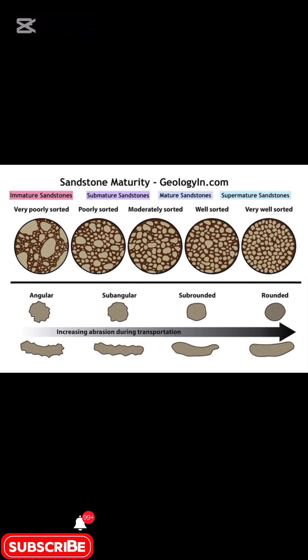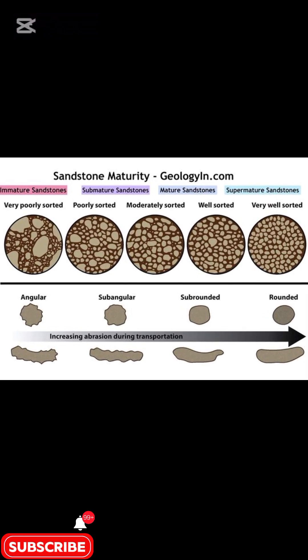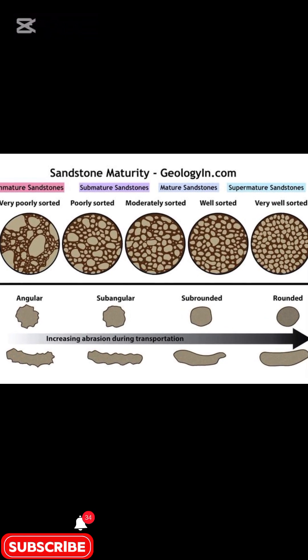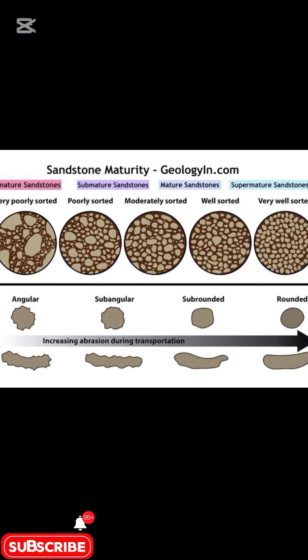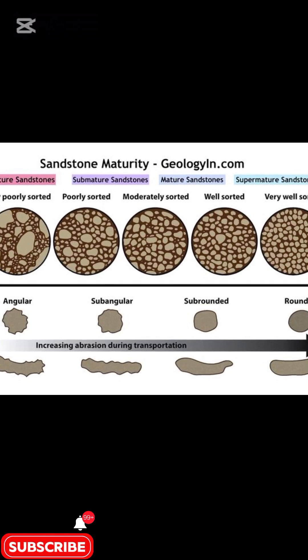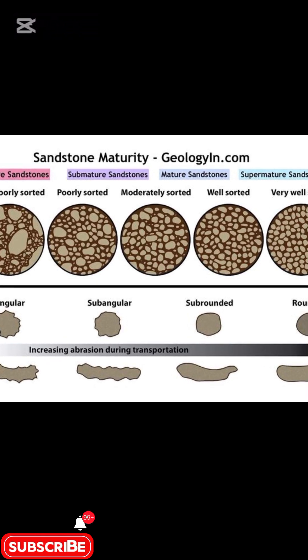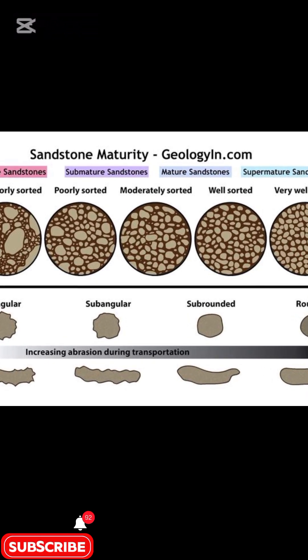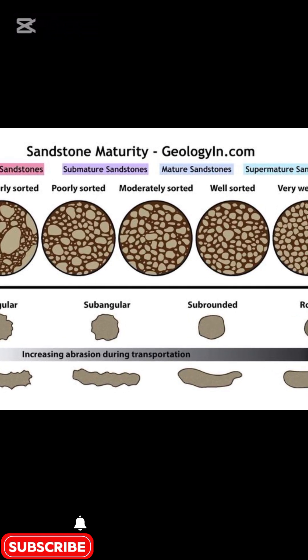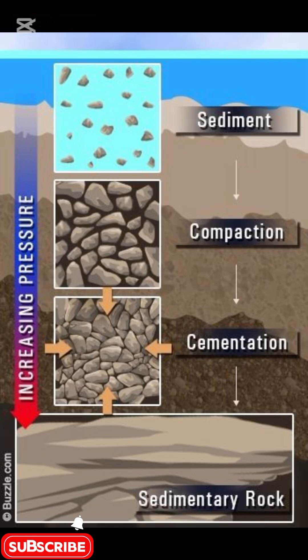Grain roundness reveals transport distance. Angular grains indicate proximity to the source with minimal transportation. Sub-angular to sub-rounded grains indicate moderate transport, typical of river and delta deposits.